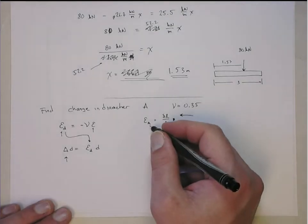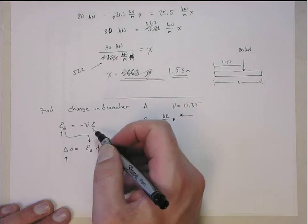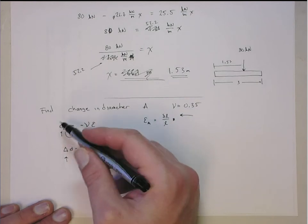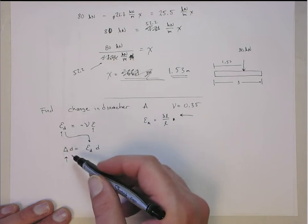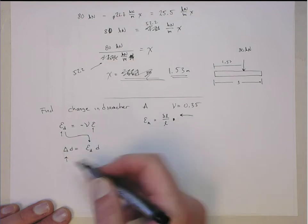To do that, first we need to find the strain in A, use the Poisson ratio to get the diametric strain, and then using that in the strain definition, change in diameter over the original diameter, to get the change in diameter.